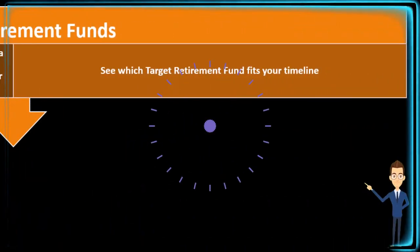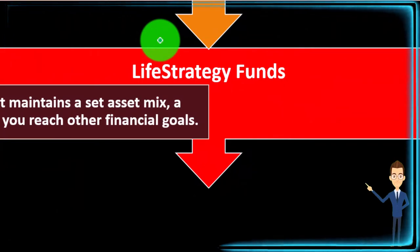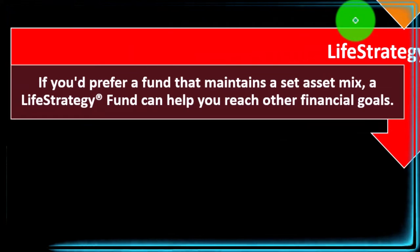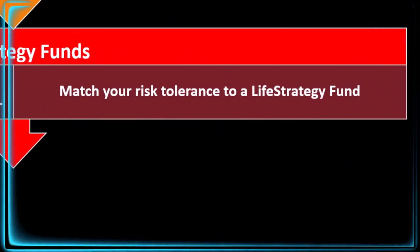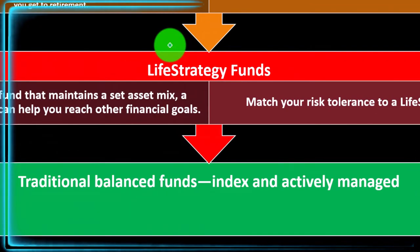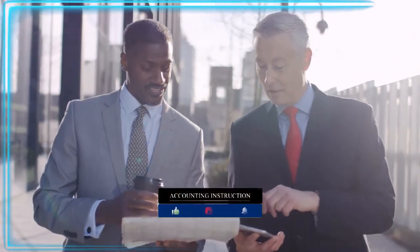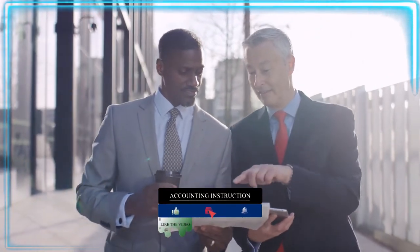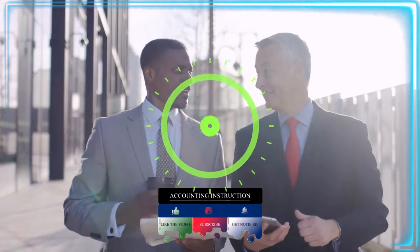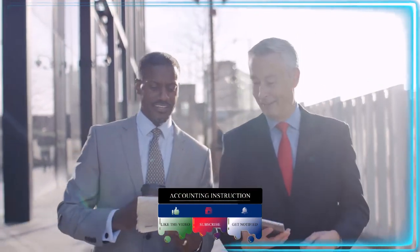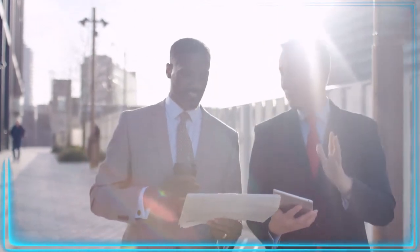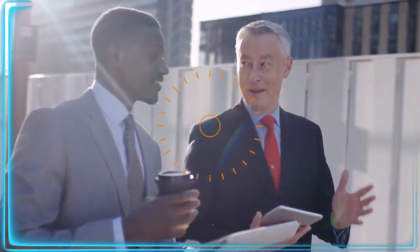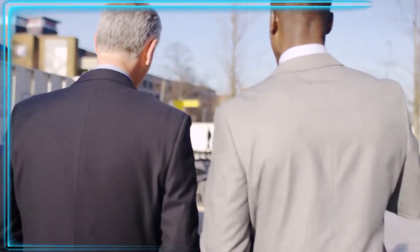You can also check which target retirement fund fits your timeline. If you prefer a fund that maintains a set asset mix, a Life Strategy fund can help you reach other financial goals by matching your risk tolerance. There are also traditional balanced funds — both index and actively managed. Actively managed means giving more leeway to a manager who believes they can beat the market, but these are fairly highly paid managers, so it costs more.